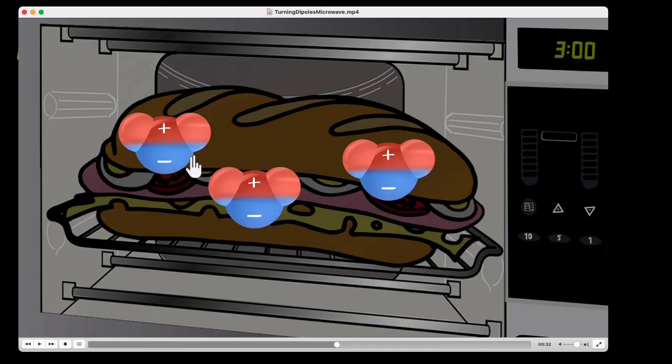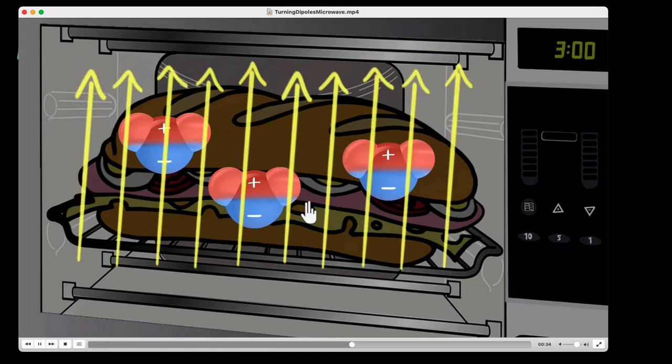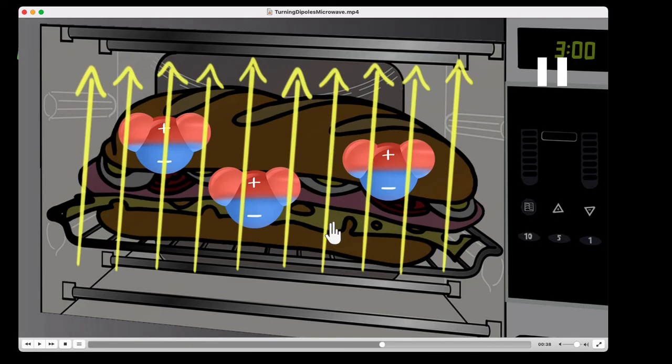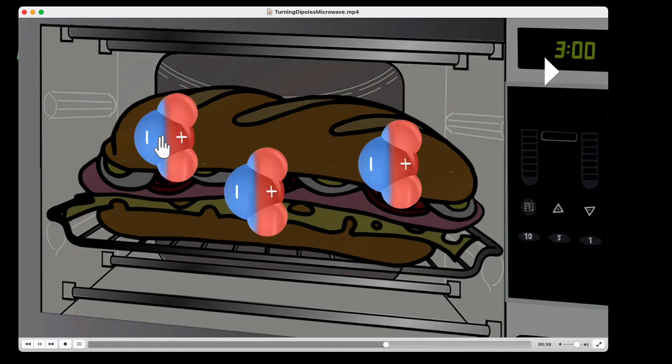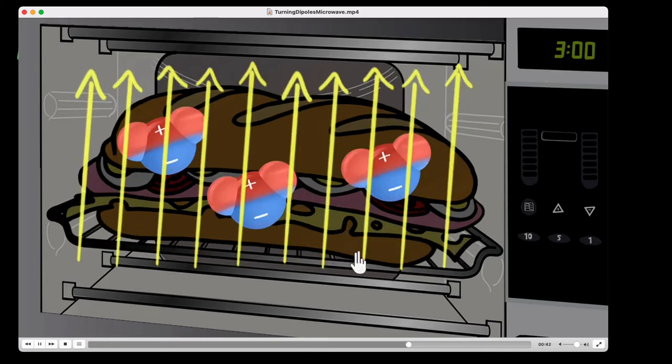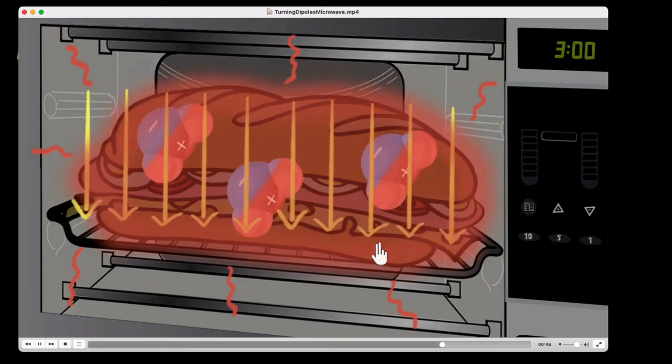That tiny dipole, these tiny dipoles, when they come inside a flipping electric field, they will keep turning. And as they turn, they will hit other molecules, they will make them vibrate. Pretty soon, all the molecules are jiggling, and as a result, your burger is gonna get hot very, very quickly. This is how microwave ovens work.